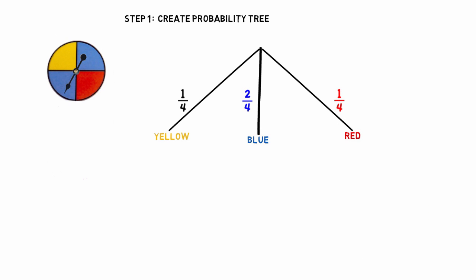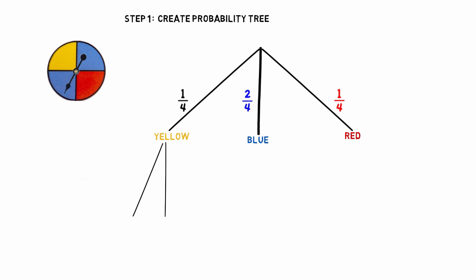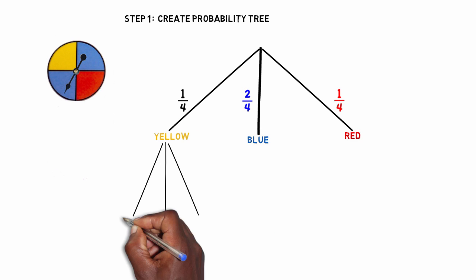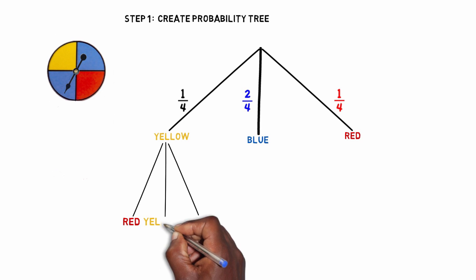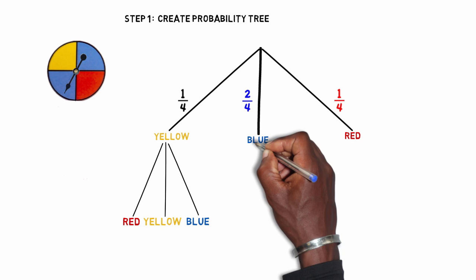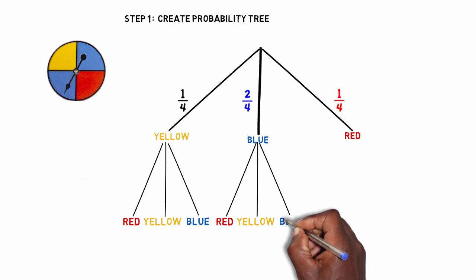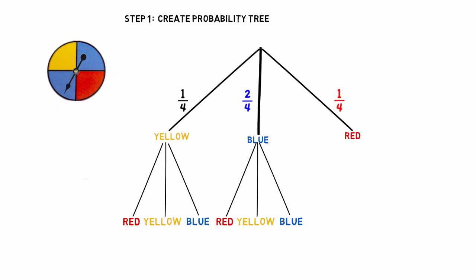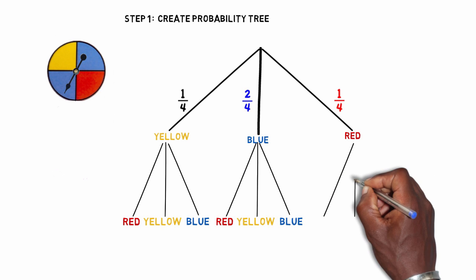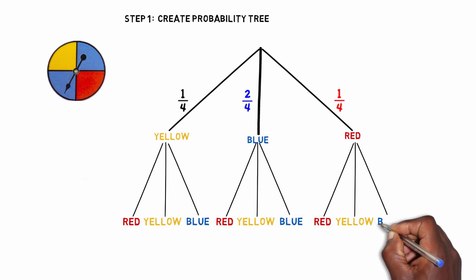Since we're spinning twice, we need to calculate the probabilities for the second spin. If you spin yellow first, your second spin could land on red, yellow again, or blue. If your first spin was blue, you could land on red, yellow, or blue. If your first spin was red, your second spin can also land on red, yellow, or blue.